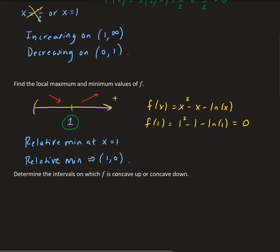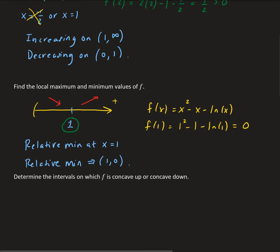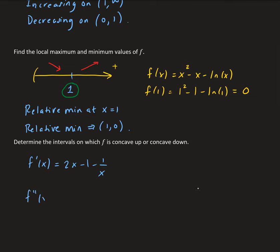Next we need to determine the concavity, and for that we're going to use the second derivative of our function. The first derivative was 2x minus 1 minus 1 over x. So we're going to take the derivative of this with respect to x. We get 2, and the derivative of negative 1 over x gives us positive 1 over x squared. So f double prime of x equals 2 plus 1 over x squared.